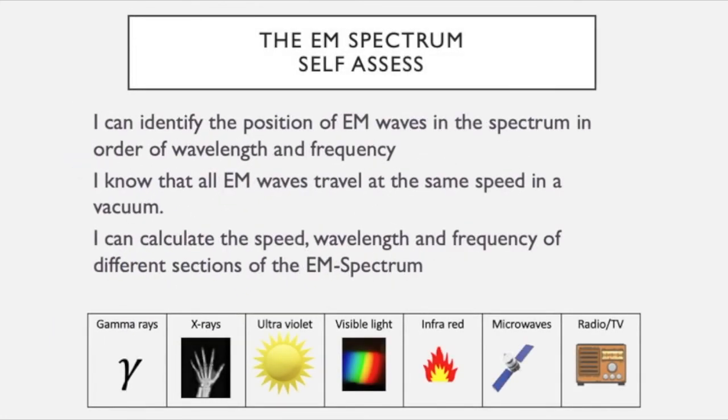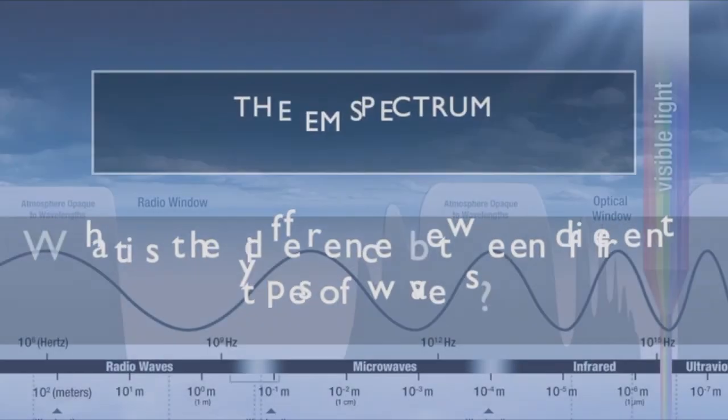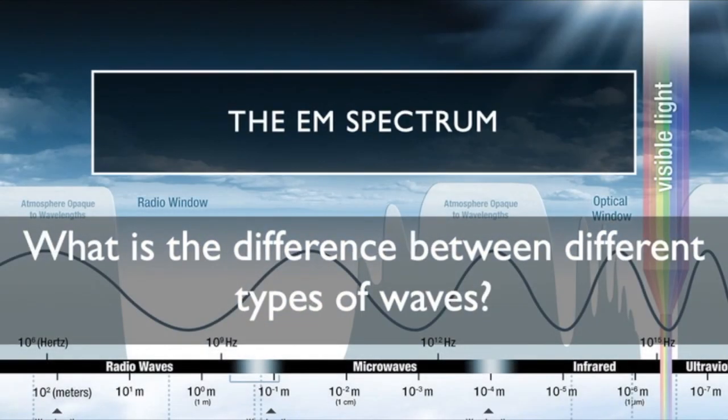So that's the end of today's one then. This is what you should be able to do: you should be able to identify the position of electromagnetic waves in the spectrum in order of wavelength and frequency, you should know that all EM waves travel at the same speed in a vacuum, and you can calculate the speed, wavelength and frequency of different sections of the electromagnetic spectrum.